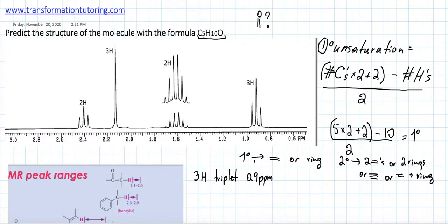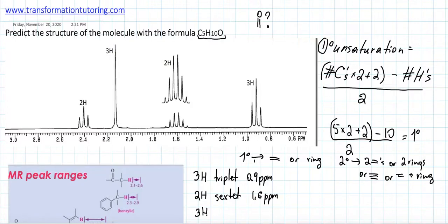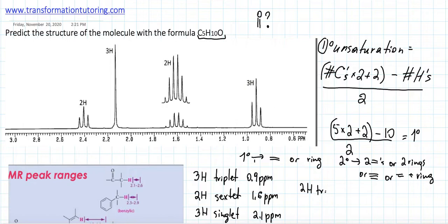Next we see two hydrogens with six peaks — that's a sextet — so: 2H sextet at 1.6 ppm. Then three hydrogens with just one peak — a singlet — at around 2.1 ppm. You don't have to be super precise. The last signal is two hydrogens, a triplet, at about 2.4 ppm.